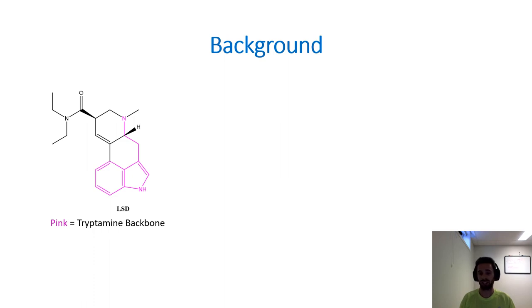I want to talk about more background information of LSD. This time in pink, I have something different outlined in the structure. This thing outlined in pink is called the tryptamine backbone. Back when people were trying to figure out the mechanism of action of LSD, they had the simple realization that a neurotransmitter in our brain also has a tryptamine backbone.